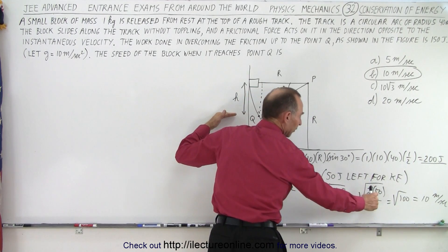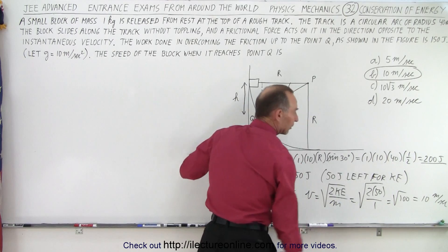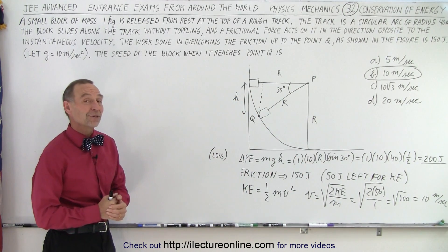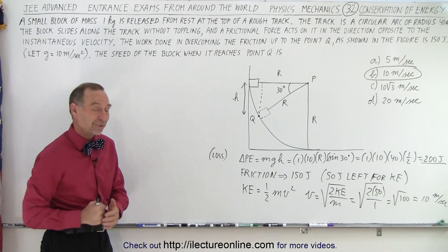Take the square root of that. 2 times 50 divided by 1 is 100, take the square root, you get 10. So yes, you can squeeze this one out in three minutes or less, and that is how it's done.